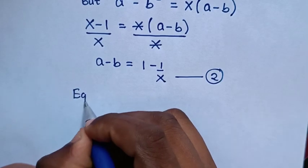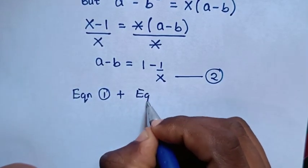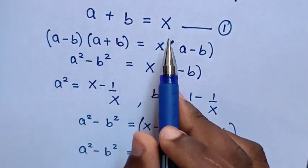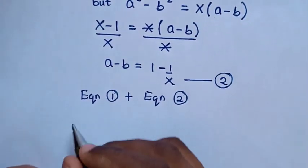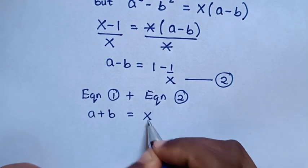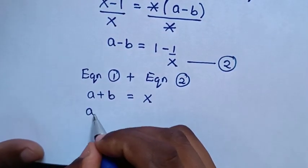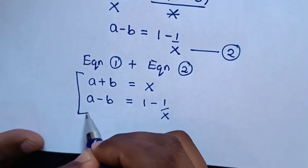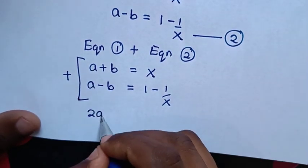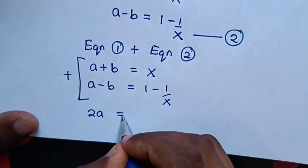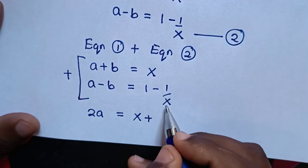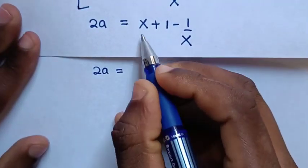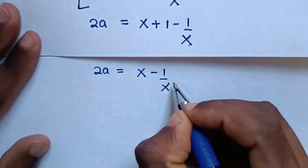In the next step, we take equation 1 plus equation 2. Equation 1 is a plus b equals x, and equation 2 is a minus b equals 1 minus 1 over x. Adding them: a plus a is 2a, b minus b is 0, and the right side is x plus 1 minus 1 over x.